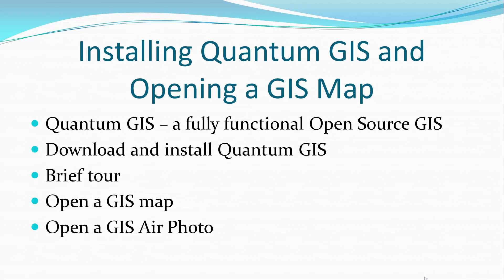Probably the biggest difference you'll find between open source geographical information systems and commercial ones is the nature of the support. Whereas QuantumGIS is written and supported by a community, commercial geographical information systems are mostly supported under commercial support plans.